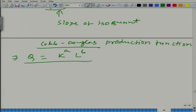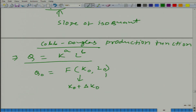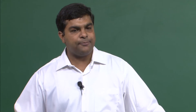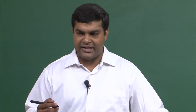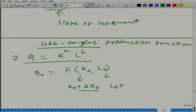Let us take a general case. What is basically happening: we are using, let us say, to produce q-naught level, we are using k-naught and l-naught. And now what we are talking about, we are changing k-naught to k-naught plus delta k-naught, and let us leave it as positive, because we know if one input is increased, the second input has to be reduced to come to the same level, but the expression will bring that minus sign. So l-naught plus delta l-naught.